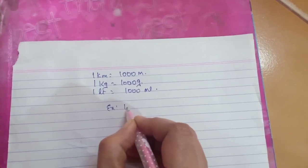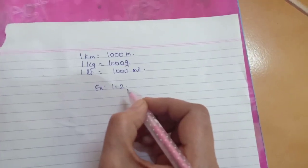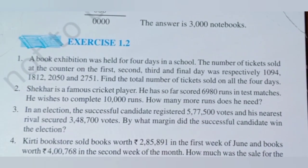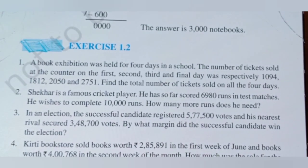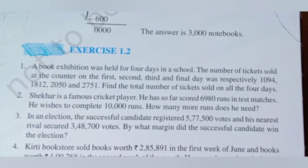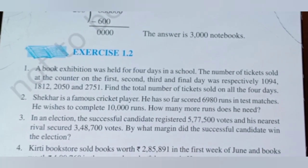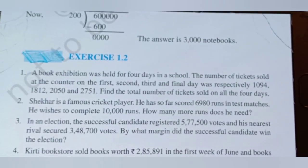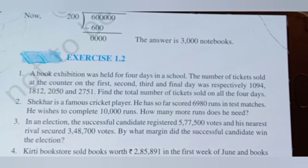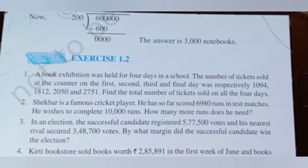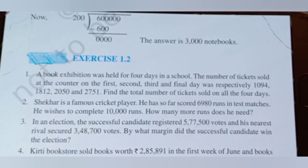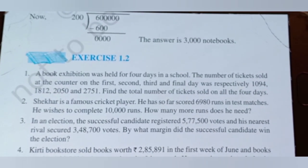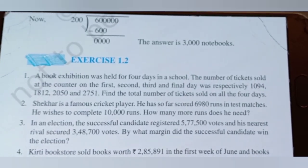We are going to start Exercise 1.2. The first question is: a book exhibition was held for 4 days in a school. The number of tickets sold at the counter on the first, second, third, and final day was respectively 1094, 1812, 2050, and 2751. Find the total number of tickets sold on all 4 days. To find the total, we need to add all the tickets sold on all 4 days.